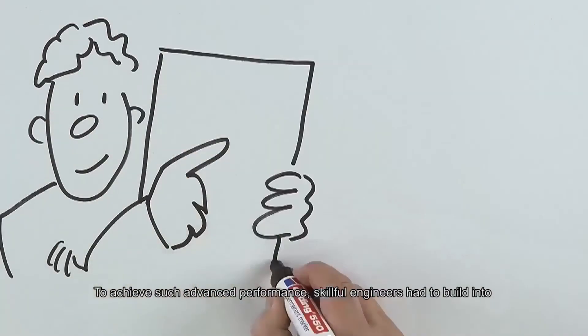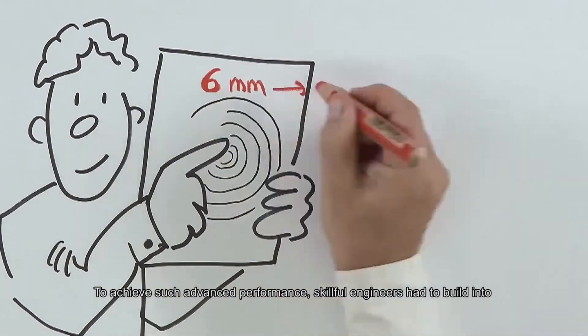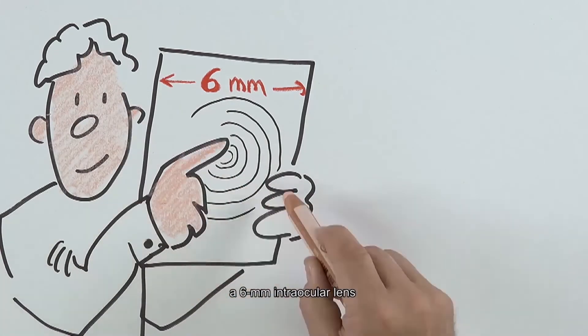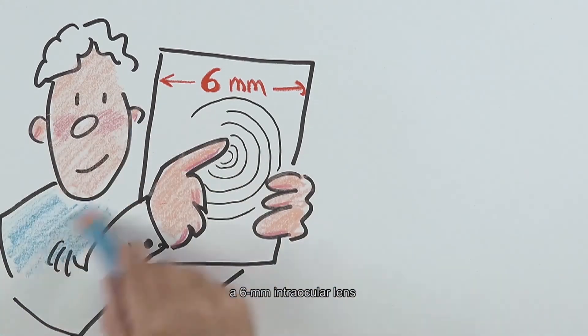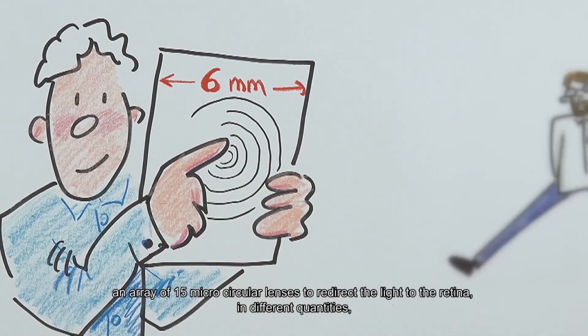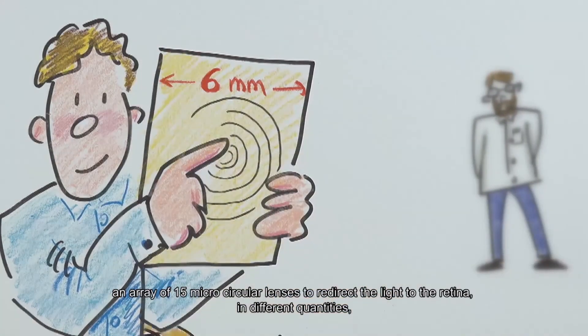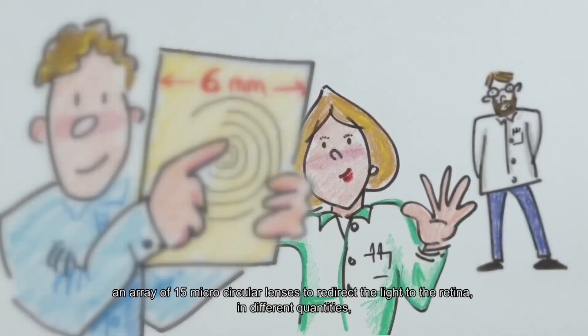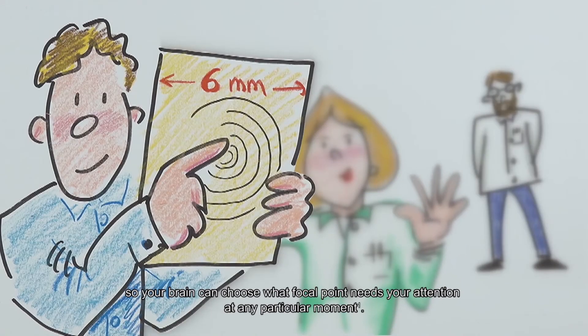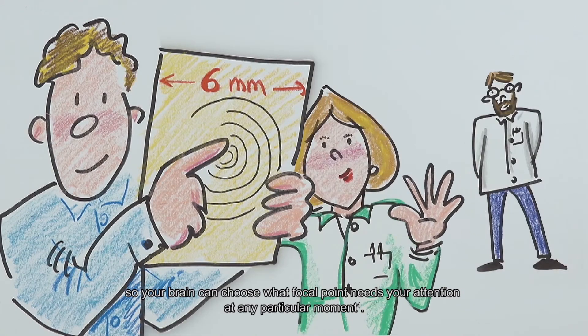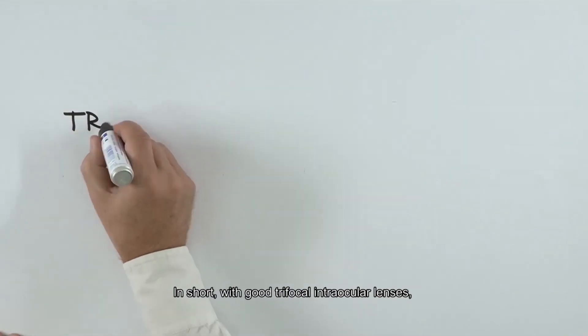To achieve such advanced performance, skilful engineers had to build into a 6mm intraocular lens an array of 15 microcircular lenses to redirect the light to the retina in different quantities so your brain can choose what focal point needs your attention at any particular moment.